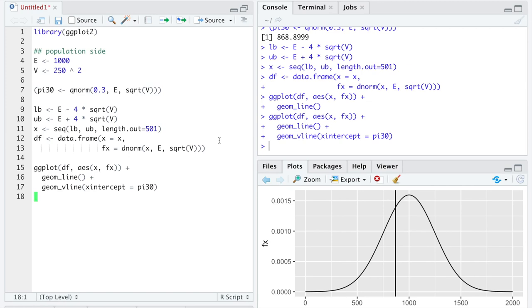is that value on the x-axis, such that there's 30% of the area under that curve to the left of the vertical line. This is the population side discussion of a percentile.